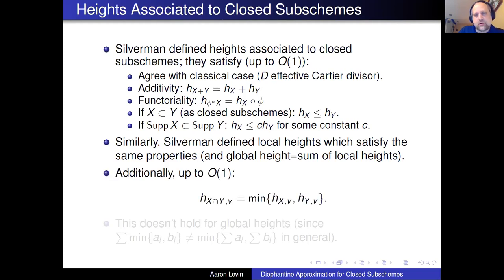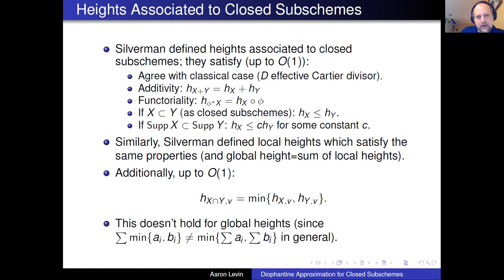Additionally, and this is an important property: up to a bounded function, one way to think about these is that the intersection of two closed subschemes — the local height associated to that intersection — corresponds to the minimum of the local heights on X and Y. This only works for local heights, not global heights, because the sum of minimums is not the same as the minimum of the sums. You only get an inequality when looking at global heights. So the intersection corresponds to the minimum in the local height sense.